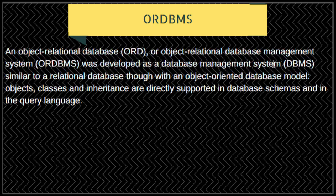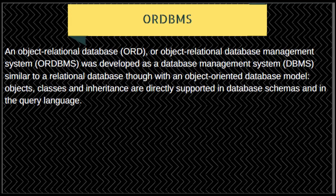The object-relational database model spans both object and relational concepts. It was developed as a database management system similar to the relational database but incorporating object-oriented concepts — objects, classes, sub-classes, and more. Advantages include large storage capacity and high access speed. A limitation is that its architecture is not appropriate for web applications.